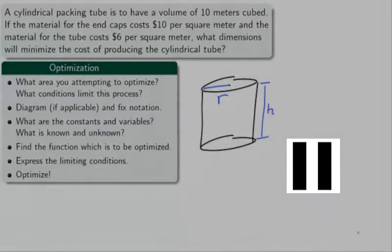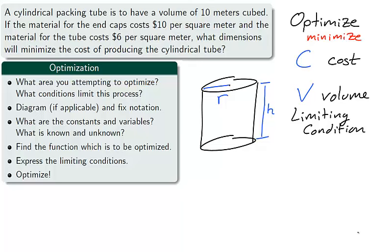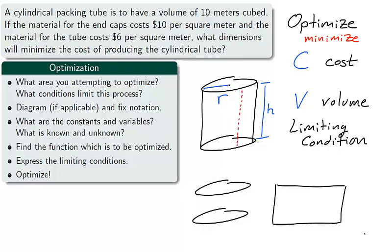As we are working with the cylinder, we have the dimensions r and h, the radius and height, respectively, of the cylinder. We are attempting to minimize the cost of the cylinder, but we are limited by the fixed volume, 10 meters cubed. The cost of the tube is determined by the material used on the end caps, which are the circles on top and bottom of the cylinder, and the body of the tube, which can be represented by a rectangle.